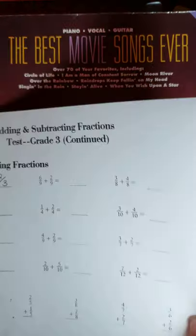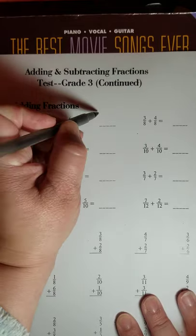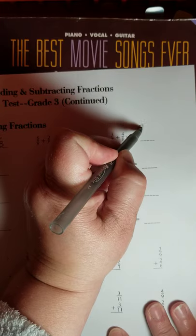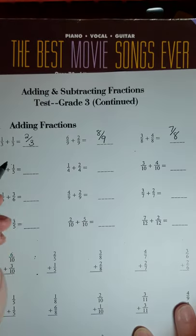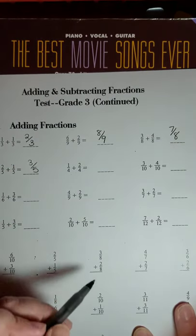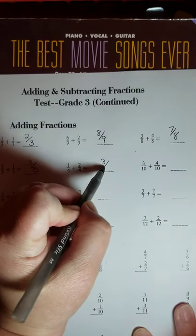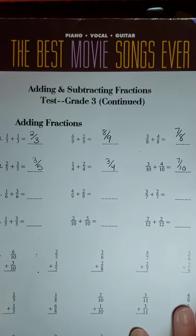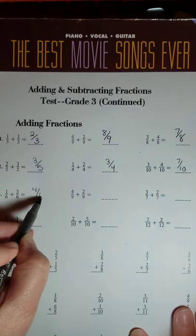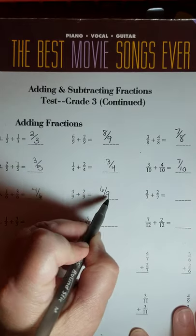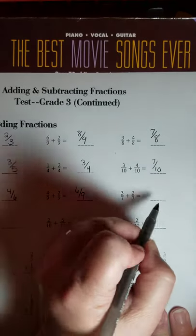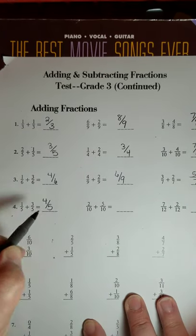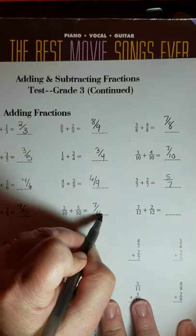I'm bringing up the addition page. Again, very much the same. 6 and 2 is 8, eight ninths. 3 and 4 is 7, seven eighths. 3 fifths. 3 fifths. 3 fourths. 7 tenths. 4 sixths. 6 ninths. 5 sevenths. 4 fifths.